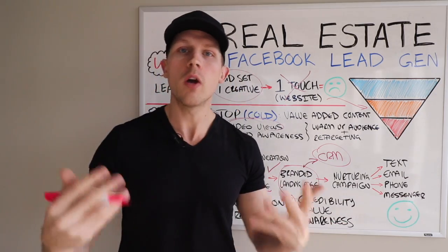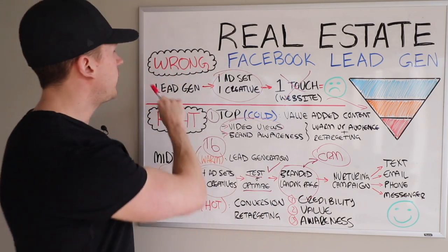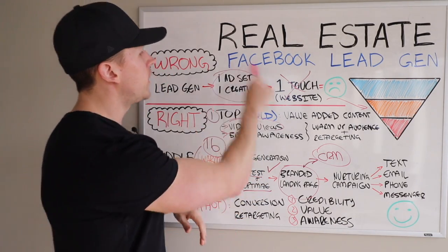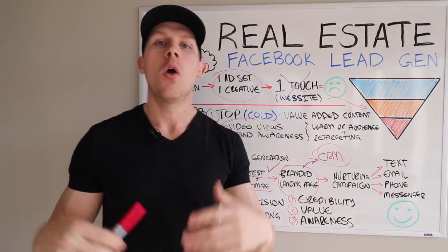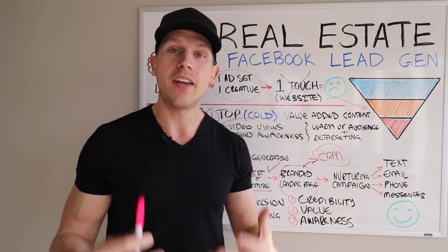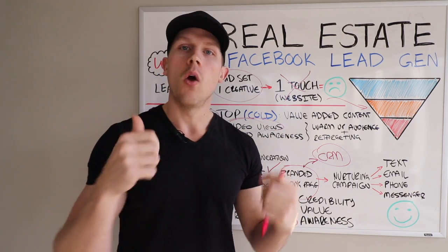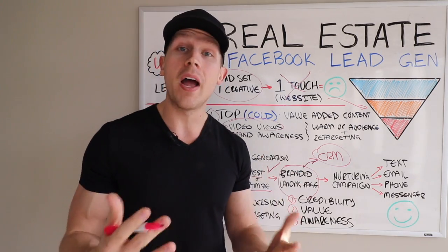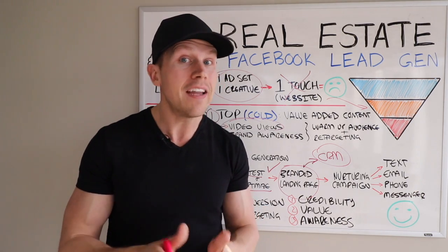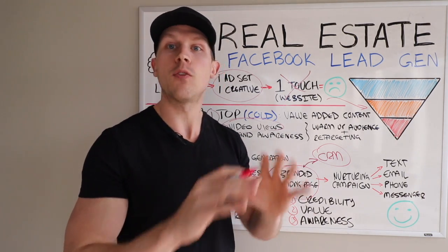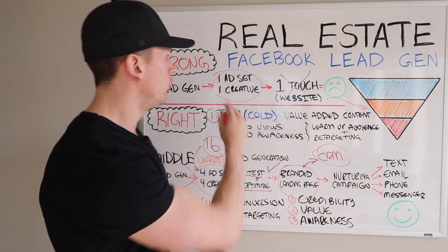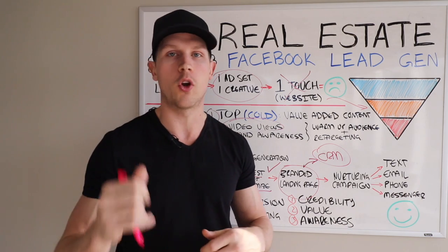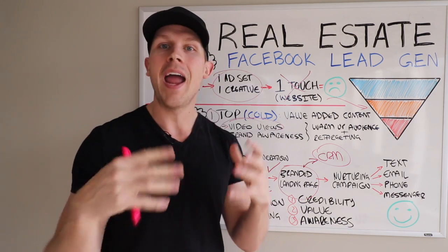Facebook lead generation 2020 — where do most real estate agents go wrong? They start with lead generation as the marketing objective. That's not terribly wrong, but they do one ad set and one creative. They create basically one campaign with one ad set. An ad set is one targeting option — one location. Because of the special ad category for housing, you can no longer adjust age and gender, but it's also one set of detailed targeting, one set of placements, and one budget. They also choose one creative — your image, your text, and the like — one photo, one video, one carousel, and one form of copy.